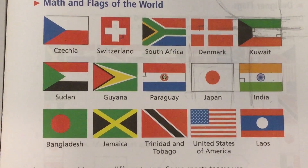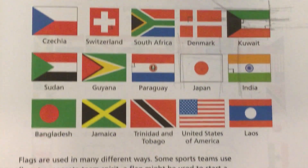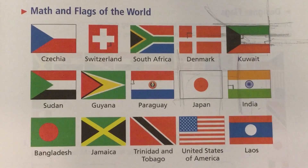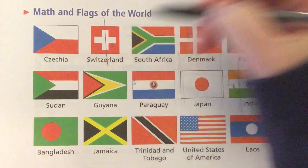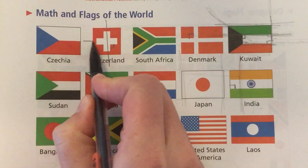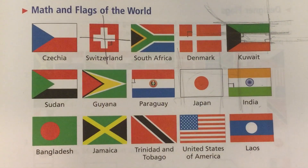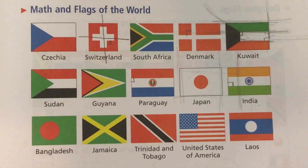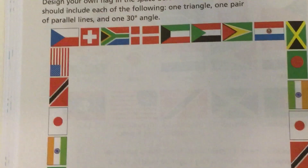And number four: which designs have at least two lines of symmetry? That would mean you could fold the flag over itself one way and it would be symmetrical, and then the other way would also be symmetrical. Have fun with those — look them over and complete your lesson.